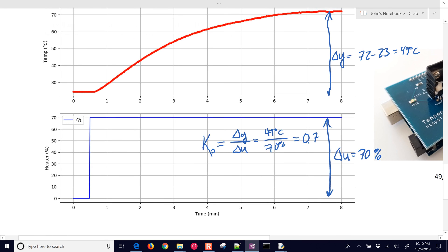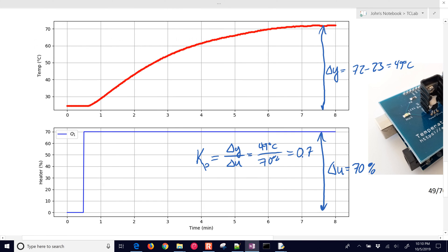There's our very first parameter that we got, and then we can go after some of the other parameters. The next one that's probably easiest to obtain is the dead time. And so if it's a second-order system like you see here,